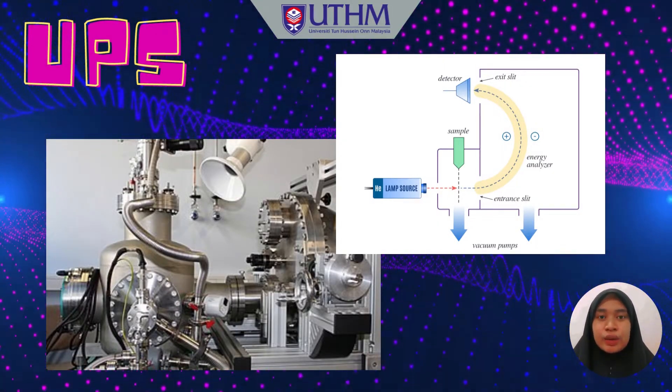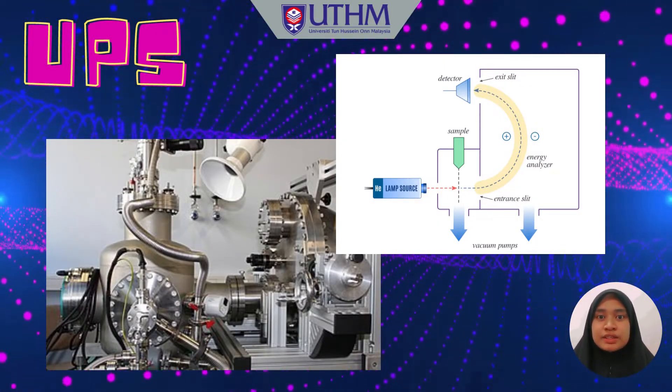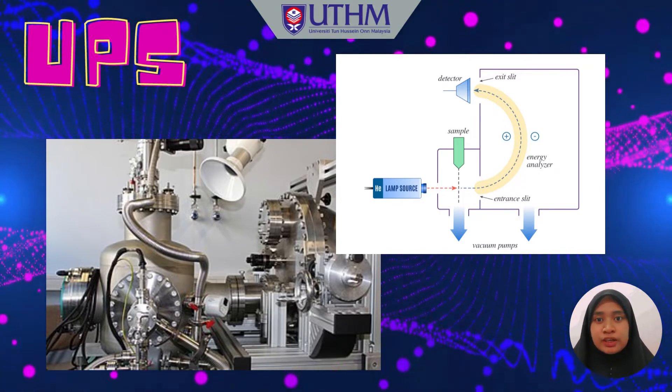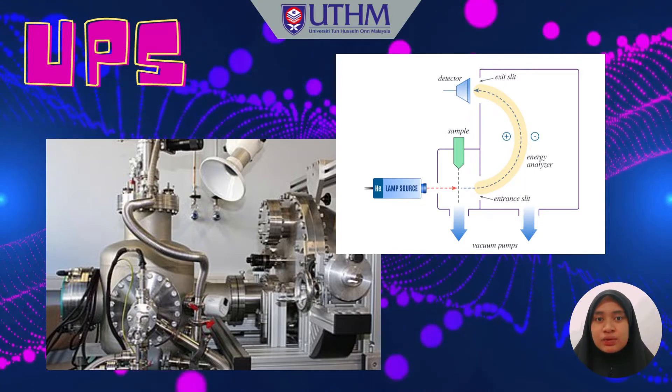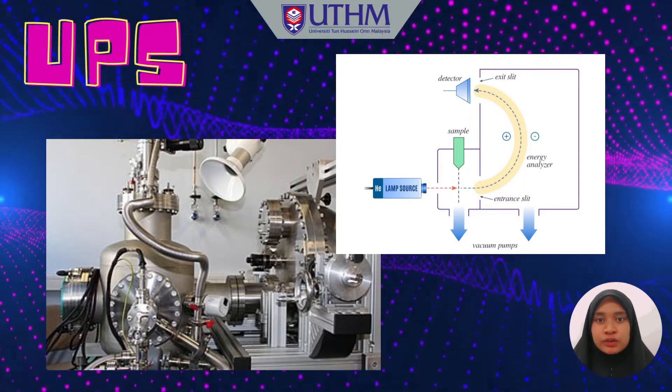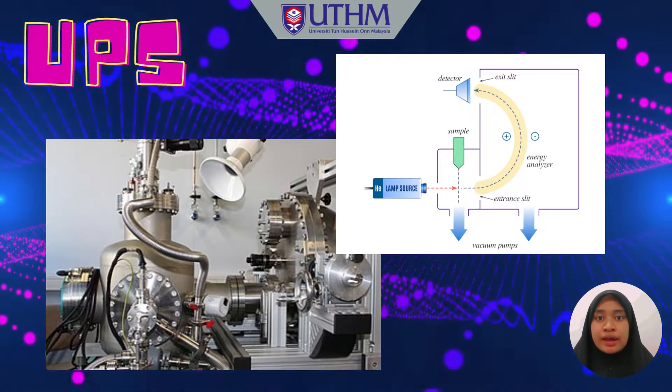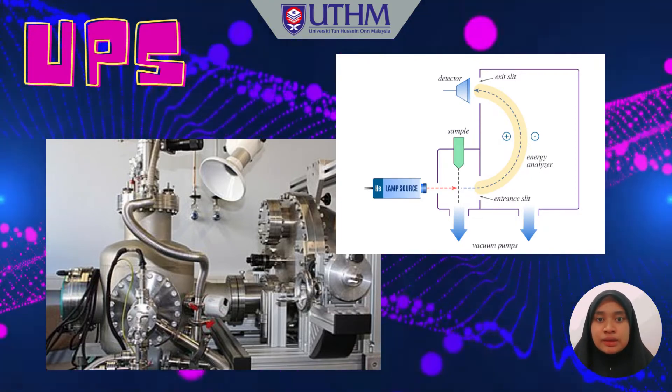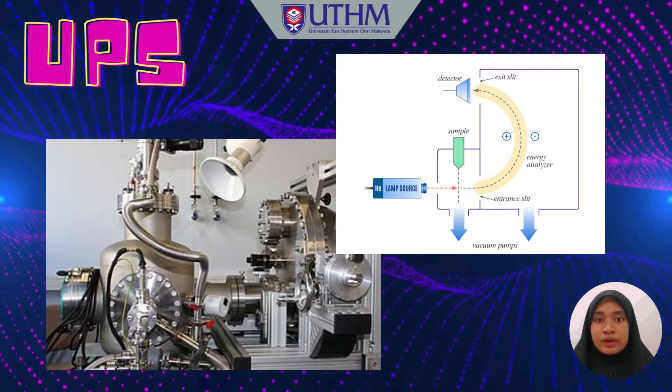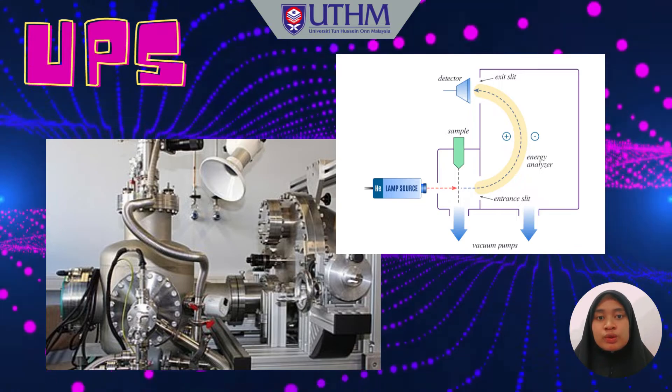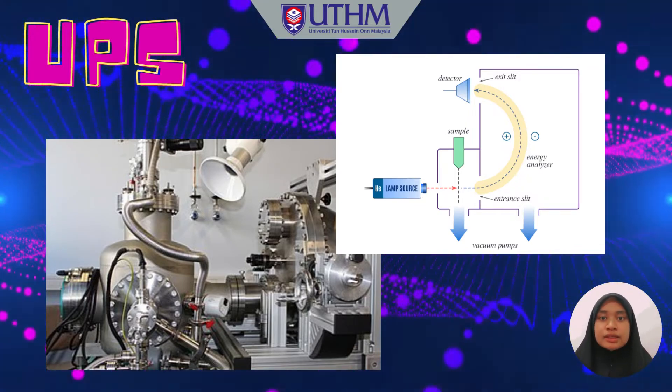This is the diagram of a basic typical PES instrument used in UPS where the radiation source is a UV light source. When the sample is irradiated, the released photoelectrons pass through the lens system which slows them down before they enter the energy analyzer. The analyzer shown is a spherical deflection analyzer which the photoelectrons pass through before they are collected at the collector's slit.